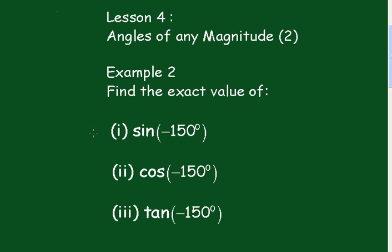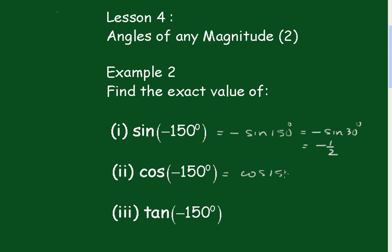Example 2: we have to find the sin of minus 150. Now the sin of minus 150 is equal to minus the sin of 150 degrees. From other lessons we know sin 150 — it's in the second quadrant so it's going to be positive sin 30, so it'll be minus sin 30, which equals minus a half. The cos of minus 150: 150 is in the second quadrant so it'll be minus the cos of 30, which equals minus root 3 over 2.